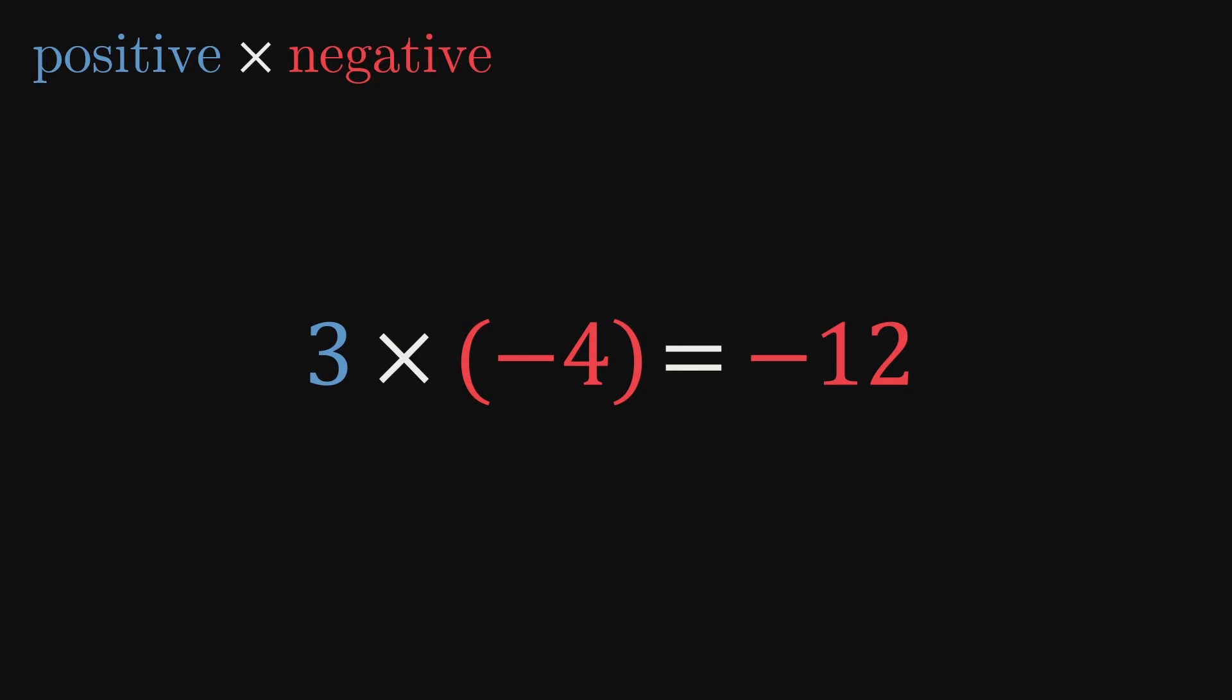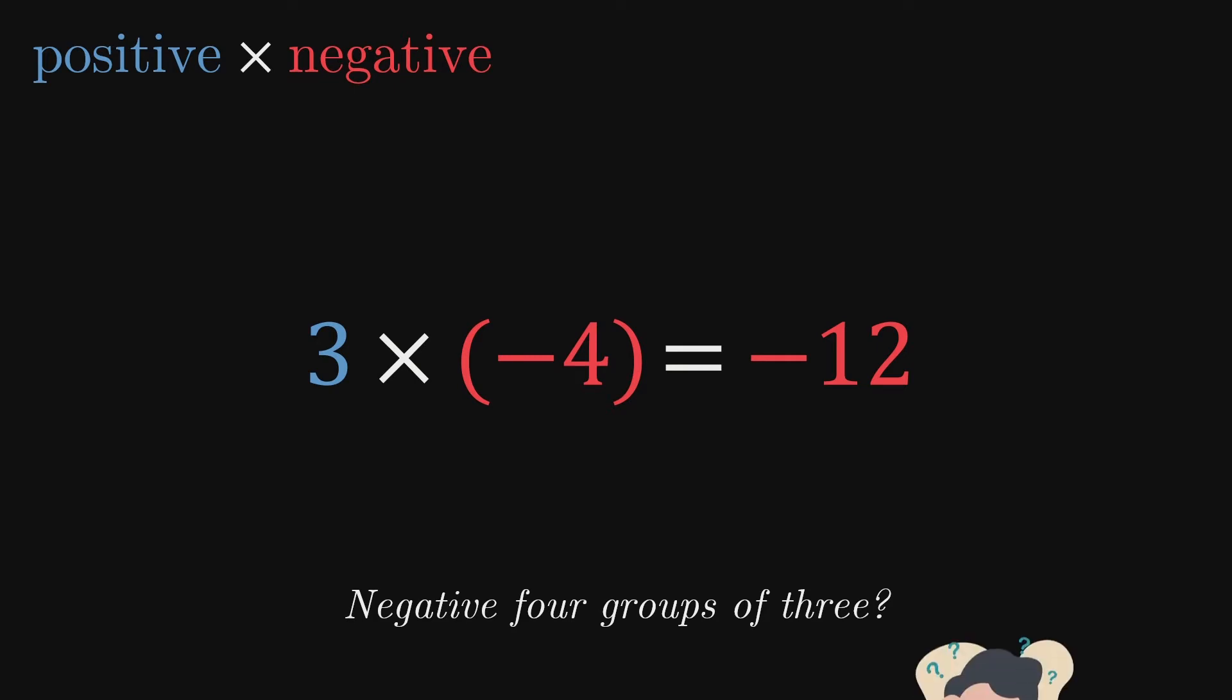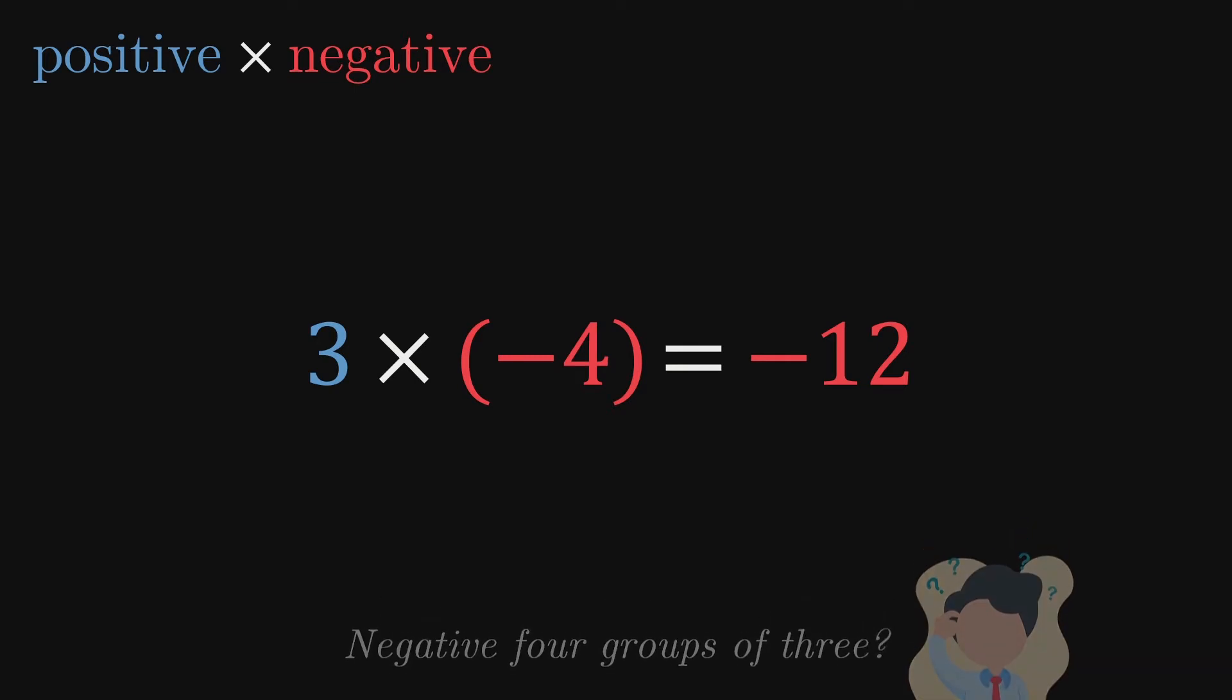Thinking of this multiplication the other way around, that is, as negative 4 groups of 3, is a bit weird and frankly not very helpful. So let's just stick with the first interpretation.